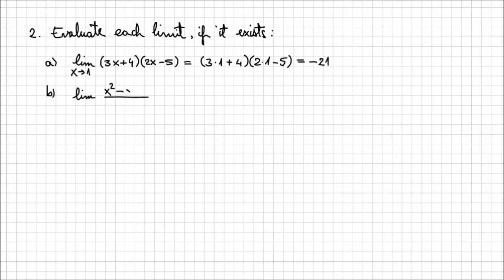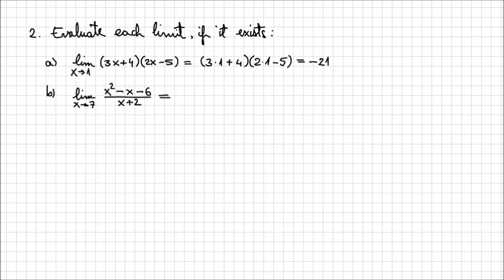For point B, let's evaluate the limit of x squared minus x minus 6 over x plus 2 when x approaches 7. This is the limit of a quotient, but I'm going to evaluate it directly. Plugging in 7 everywhere I see x, I get 7 squared minus 7 minus 6 over 7 plus 2, which gives 36 over 9, which equals 4.